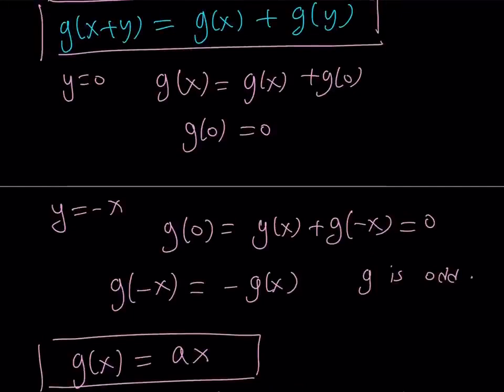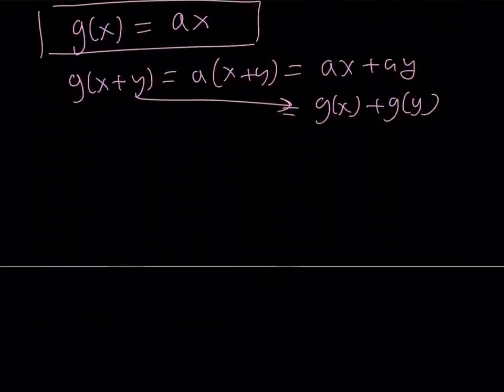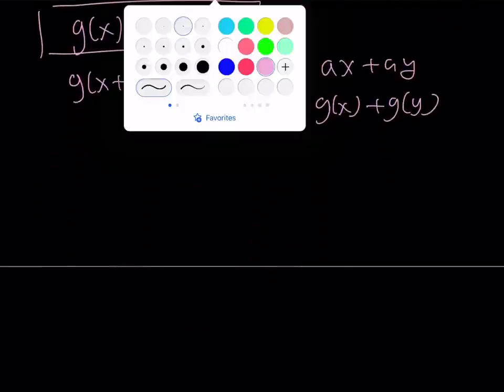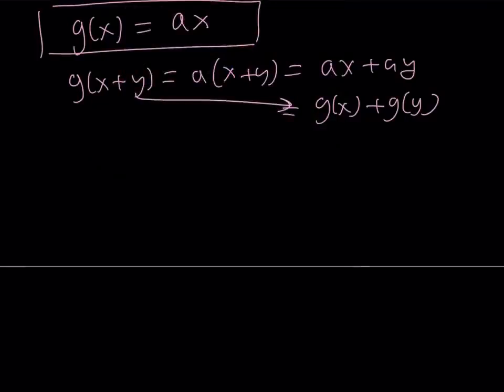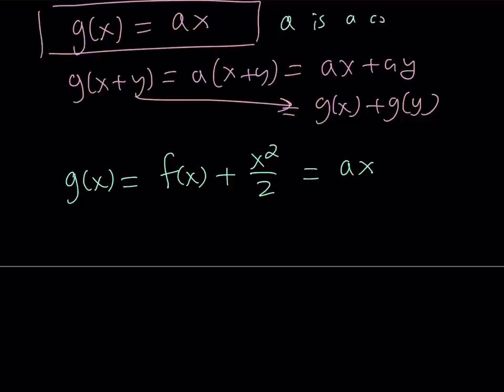Alright, great. Let's go back, because we're not looking for g(x), we're looking for f(x). Remember that? So what was our assumption? Our assumption was that g(x) = f(x) + x²/2. And we just found out that g(x) can be written as ax, where a is a constant. Of course, in this case, I should say that a is a constant, a is a real number.